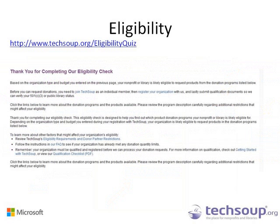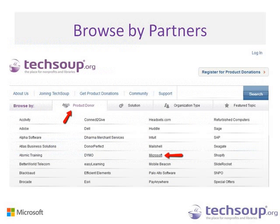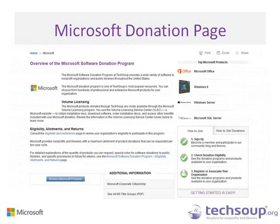On the eligibility quiz page you'll see the Select Organization drop-down — select your organization's name. If you are associated with more than one organization account, they will all be listed there. This is a general overview of the eligibility check for 501(c)(3) nonprofit organizations with TechSoup. You can then hover over the Browse by Donor section and click on the Microsoft link, which takes you to the Microsoft Donation Program page, giving you an overview including volume licensing and eligibility.